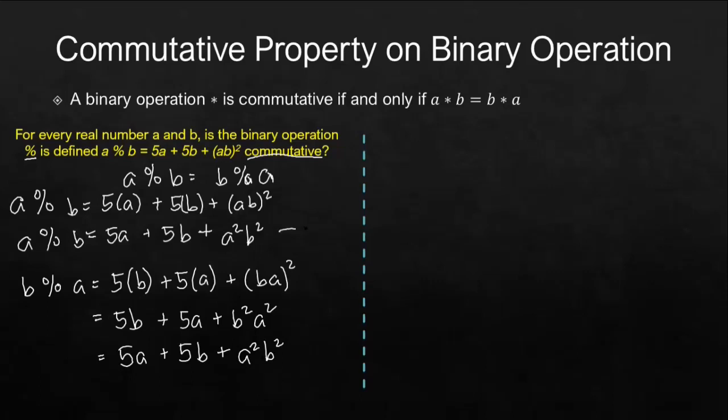So if you may notice, these two are equal. Meaning, we have a percent b is really equal to b percent a. Therefore, the binary operation percent is commutative.